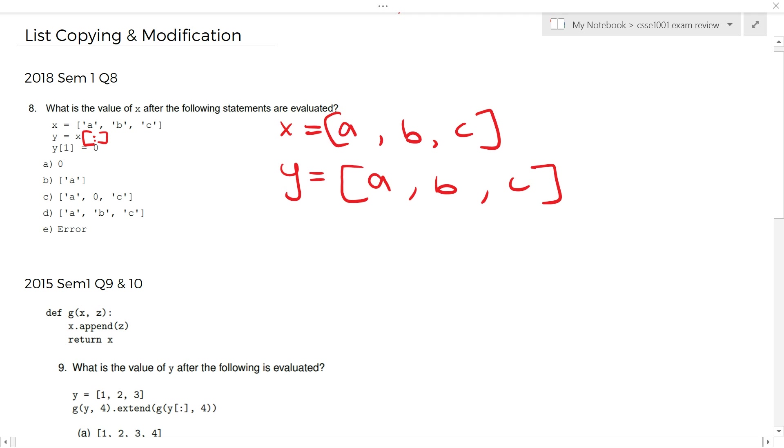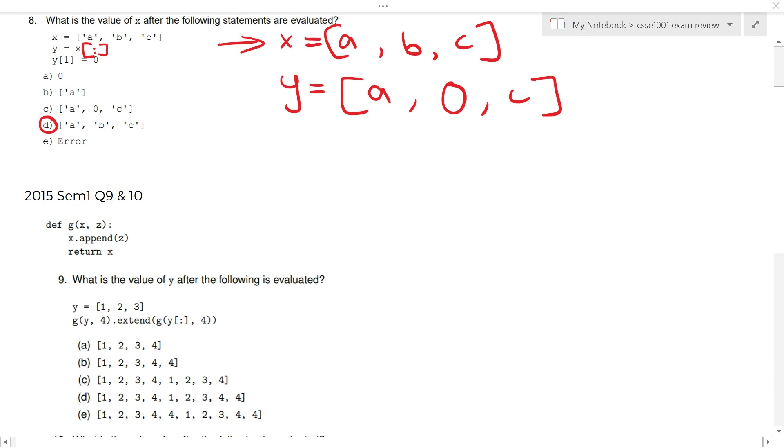So, when we change y, the one-th element of y, we get rid of this b, and we just make it a 0. So, y is still a, 0, c. But if you print out x, and as this question asks, what is x? A, b, c. Two very different things. If you want to have a Google of it, just Google like Python deep and shallow copy. There's a lot of resources online. But that's a basic gist of it. So, y equals x. Same list in memory. Y equals copy of x. Two very different things. We'll get into this more.